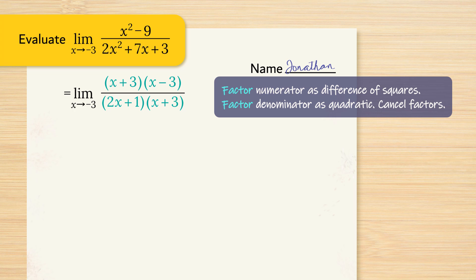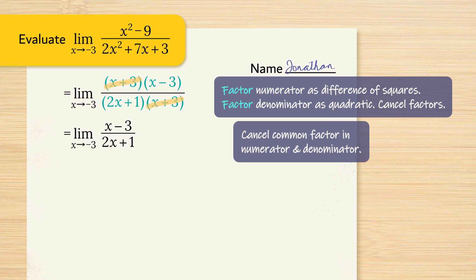We have a factor of x plus 3 in the numerator and also the denominator. We can cancel these factors. We now have x minus 3 divided by 2x plus 1.